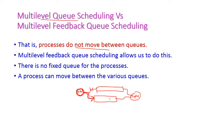But when it comes to multi-level feedback queue scheduling, there is no fixed queue for the process. The process can move between various queues — a process in one queue can be moved to another queue during execution.